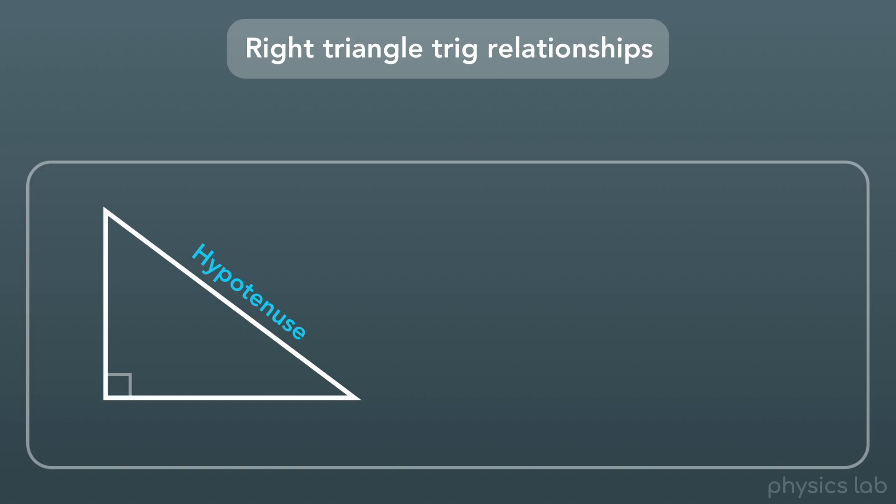And we're going to label one of the two remaining angles with the variable we call theta. But now we're going to call the short side that is next to the angle adjacent, which literally means next to, and we're going to call the side that's opposite from this angle opposite.